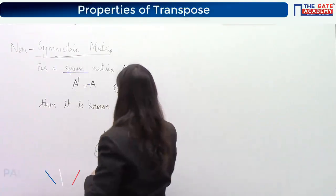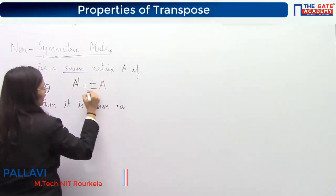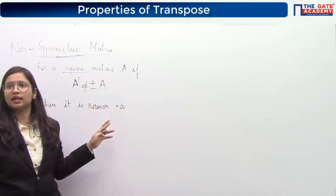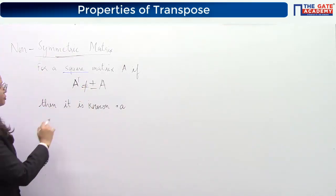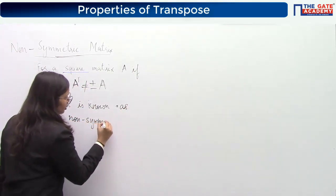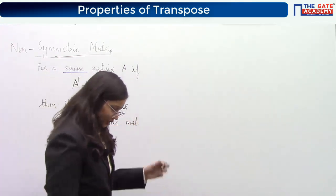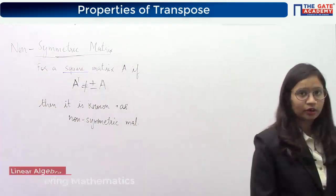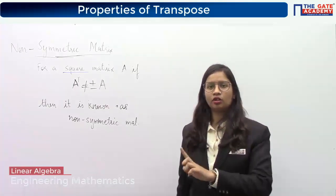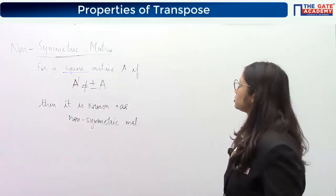For a square matrix, if A transpose is neither equal to plus A nor equal to minus A, then such a matrix is known as a non-symmetric matrix. There is no symmetricity — non-symmetric. Students always get confused with the terms skew symmetric and non-symmetric. Skew symmetry means there is symmetry but the sign will change; non-symmetric means there is no symmetry at all.